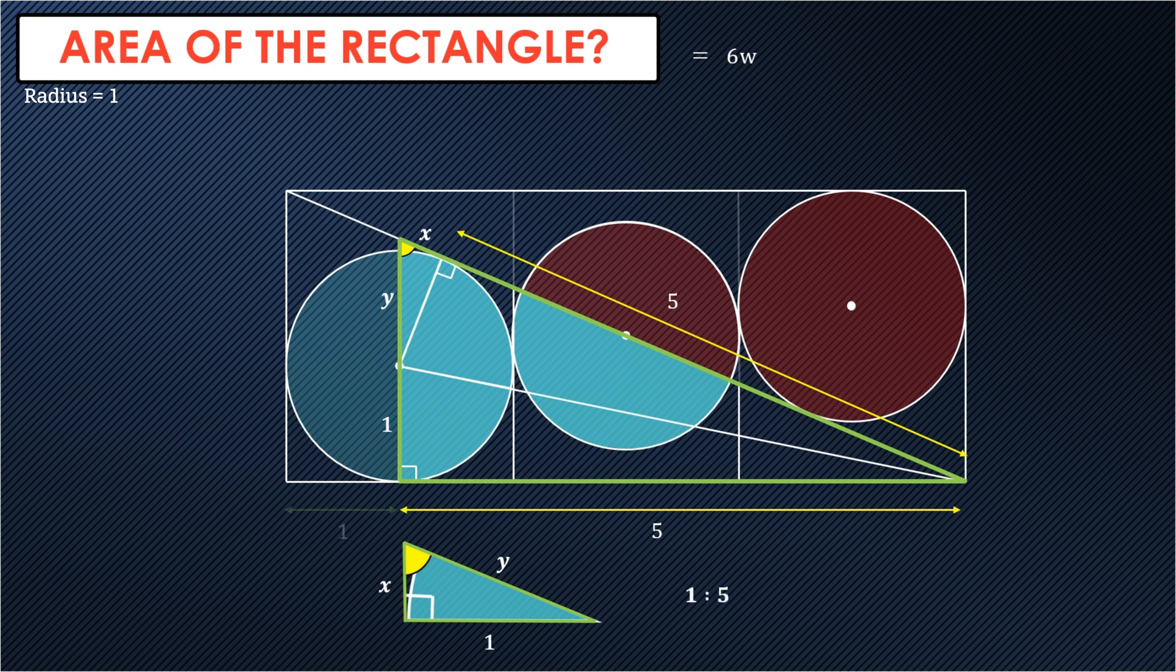And we can actually use this to then set up two equations. So the length Y plus one will be five times the size of X. So five X equals Y plus one. And the length of X plus five will be five times the length of Y. So five Y equals X plus five. Let's call these equations one and two.